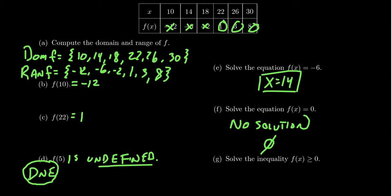So our solution would be x is equal to 22, 26, or 30. Those values of x will make f of x be greater than or equal to 0 there.